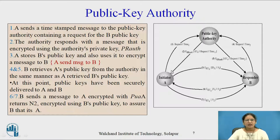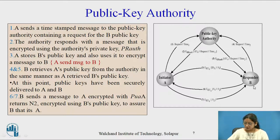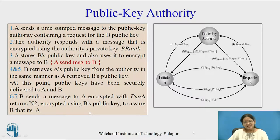In step 1, A requests B's key. In step 2, the authority sends B's public key. In step 3, A stores B's public key and starts communication. In steps 4 and 5, B retrieves A's public key from the authority in the same manner, and at this point the public keys have been securely delivered to both A and B. In steps 6 and 7, B sends a message to A encrypted with the authority's public key, and returns a nonce (N2) encrypted using B's public key to assure B that it is A. Both confidentiality and authentication are important here.